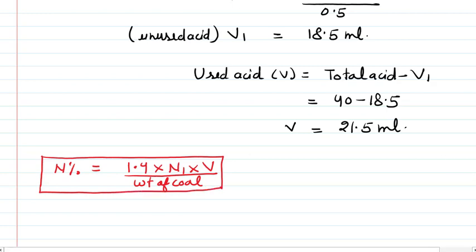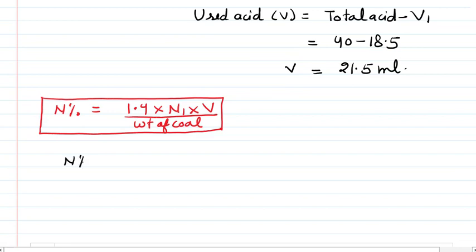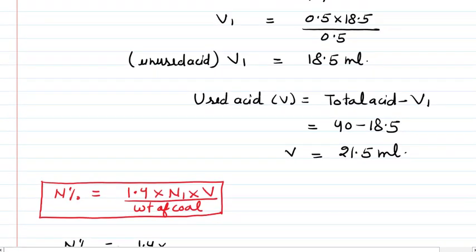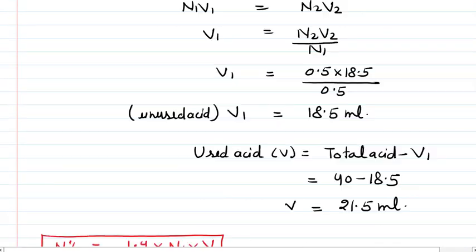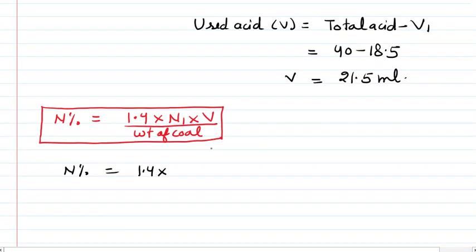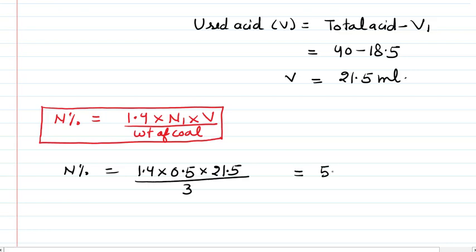After finding the unused acid, we calculate the used acid volume V = 21.5 mL. Now placing all values into the nitrogen percentage formula: % N = 1.4 × N1 × V / weight of coal = 1.4 × 0.5 × 21.5 / 3. After calculation, we get 5.01% — that is the percentage of nitrogen.